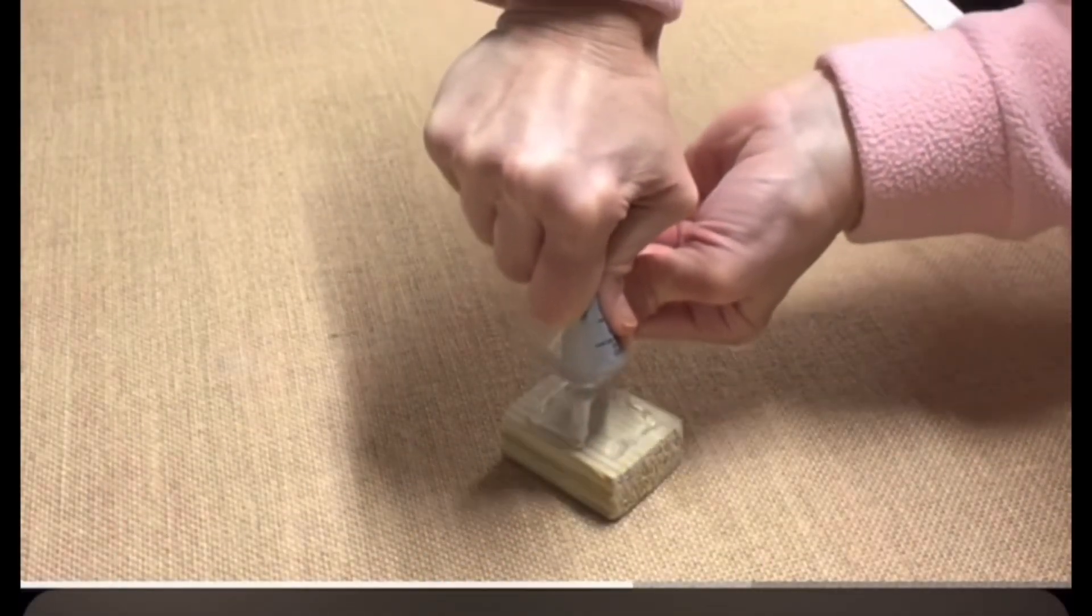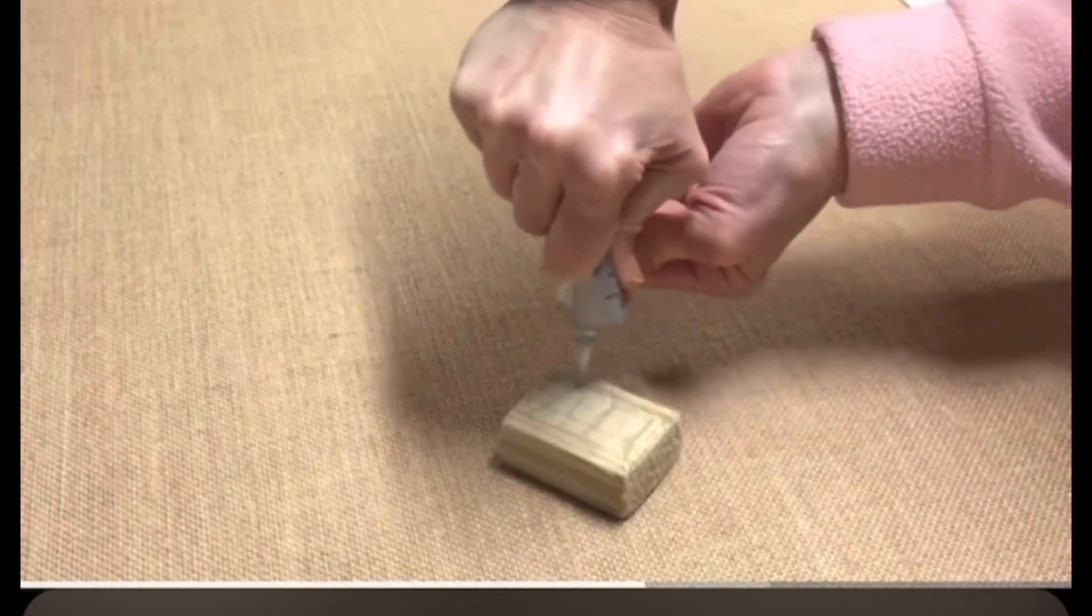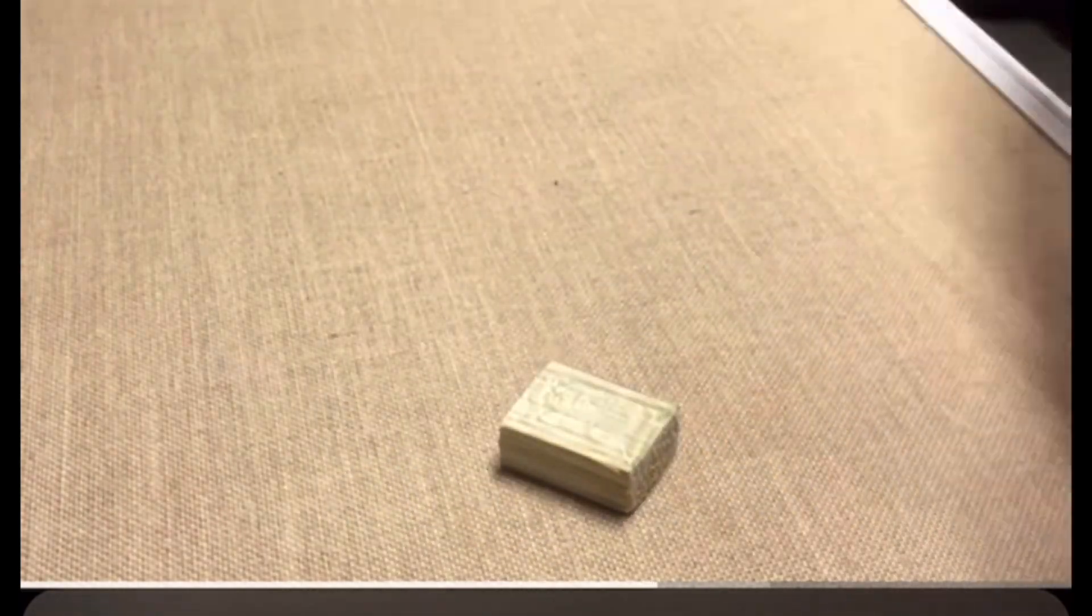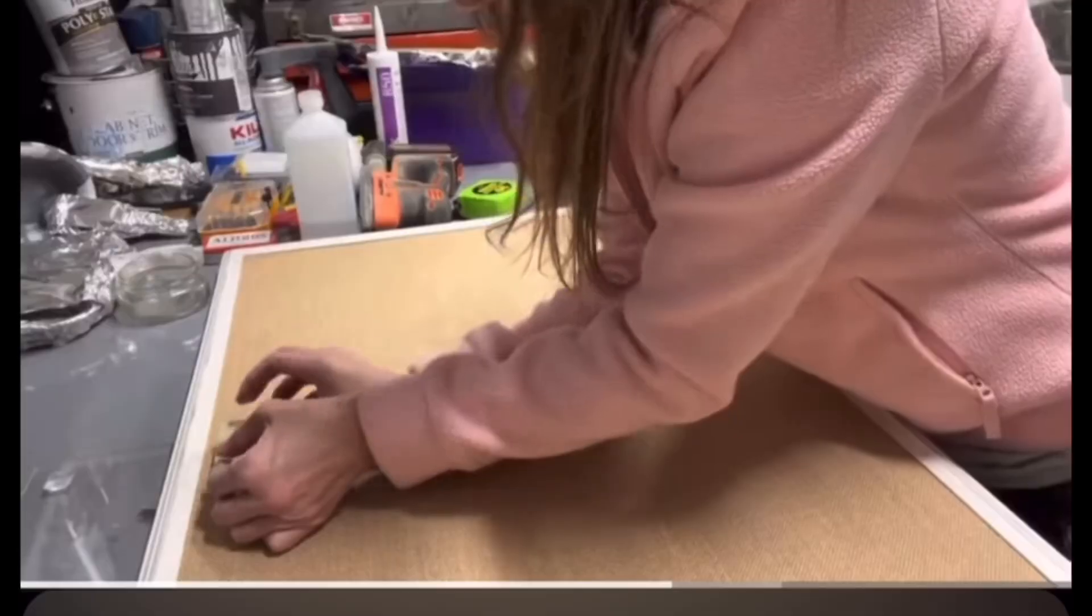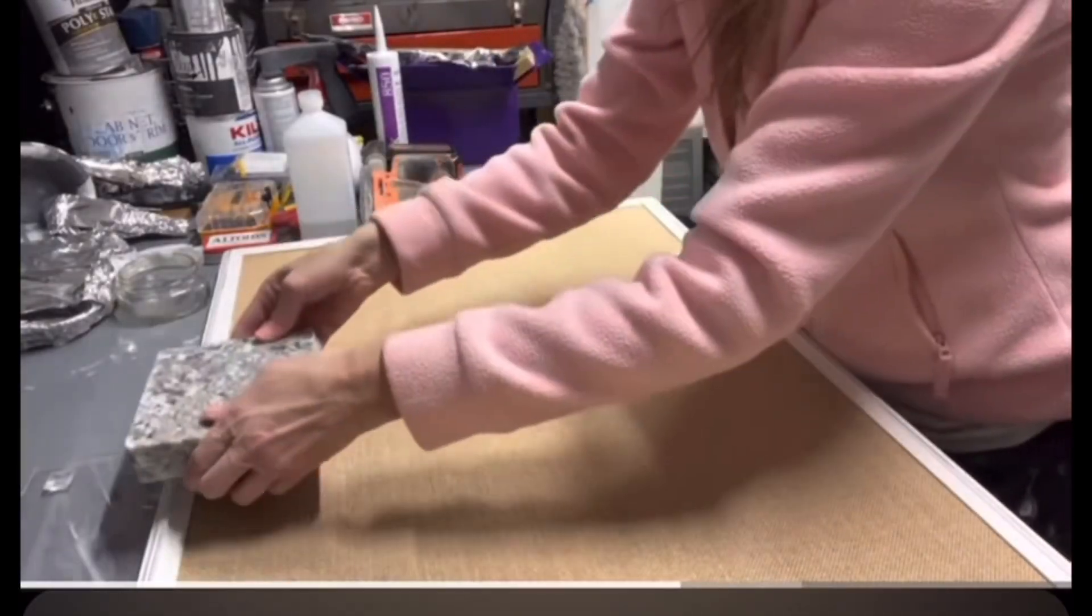Using E6000 glue on the small sanded block. I'm going to adhere the block to the bulletin board and then the zebra to the block. Heavy item on top to help it adhere.